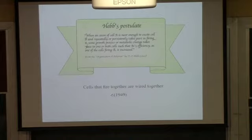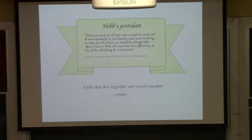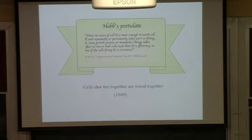The Hebb postulate, written in 1949, basically remains true to this day. It states: when an axon of cell A repeatedly makes cell B fire consistently over time, that connection should become rewarded and made stronger. It's a very simple rule: if A makes B fire, then that connection should be rewarded.